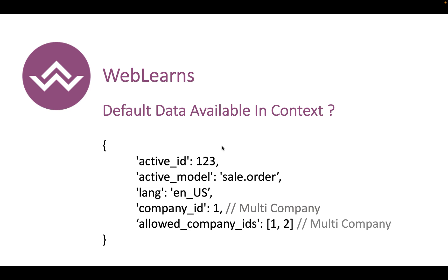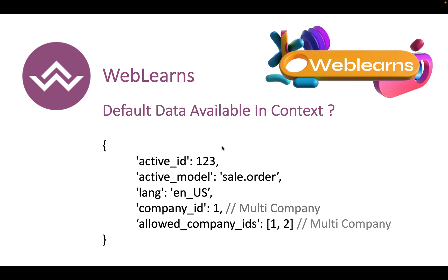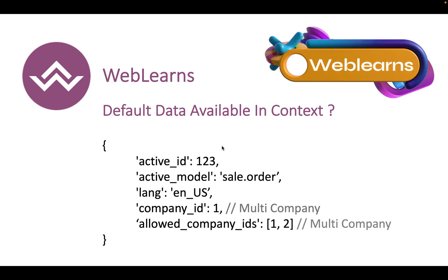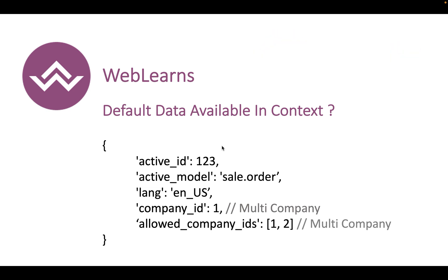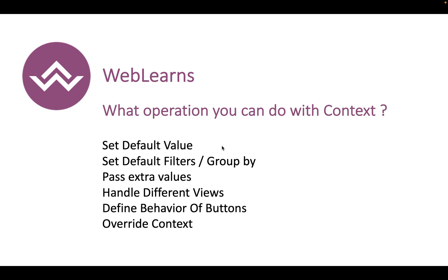For example, when you print a simple context, you will get basic information like: active_id, active_model, lang, company_id, and allowed_company_ids. This is just a sample — context could also have more keys and values, which we will see later on.